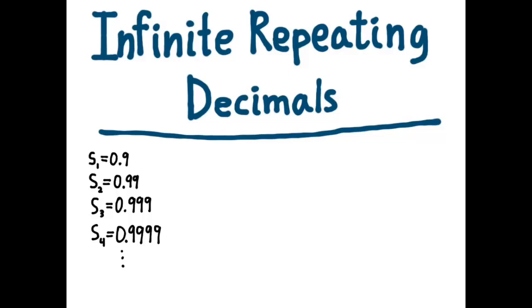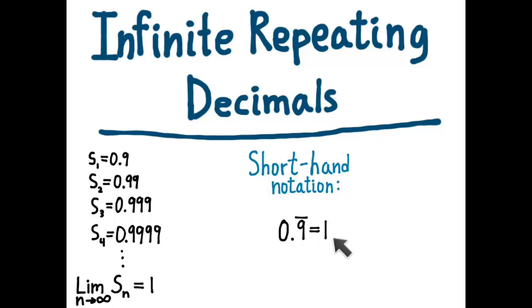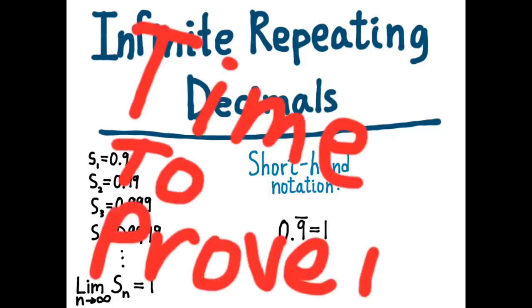And when we say the limit as N approaches infinity of S sub N equals one, what we mean is what we usually write, the shorthand notation, 0.9 repeating equals one. So, this statement that you're familiar with from earlier grades is really a shorthand notation for a calculus concept. And you have basically taken it on faith all these years. Now, it's time to prove it.